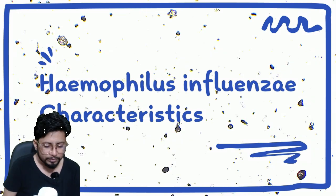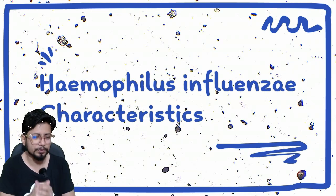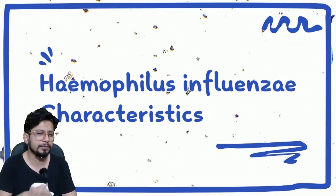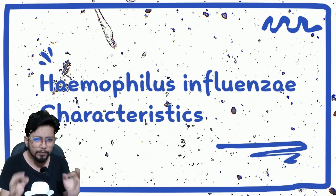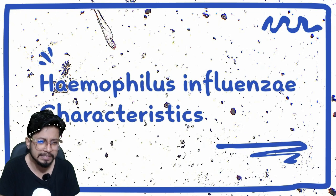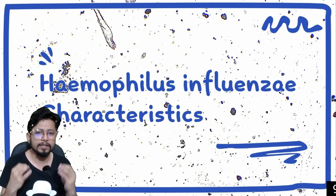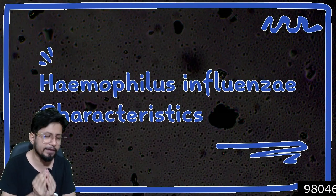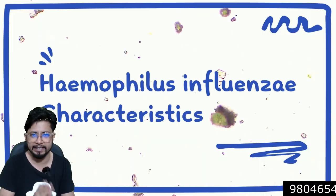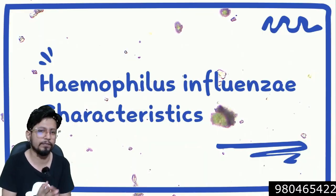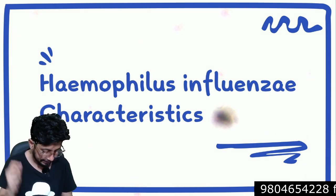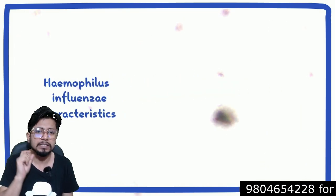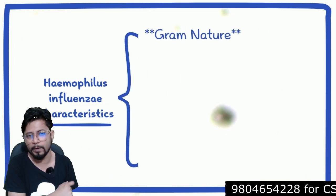Hello everyone, welcome back to another video. In today's lecture we are going to talk about Haemophilus influenza — every single detail about Haemophilus influenza is here for you. The first important property we are going to talk about is the gram nature.